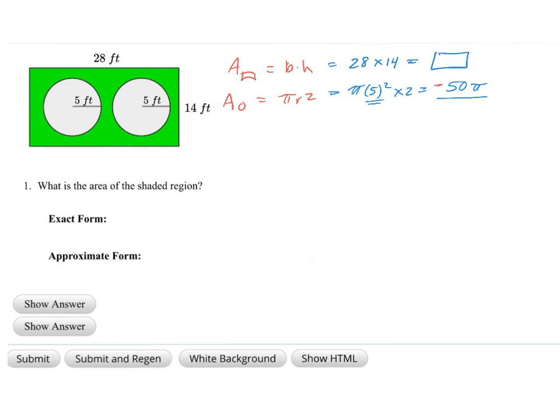Then to finish off this problem, we're going to subtract off our two circles, which is 50 pi, from the rectangle, and that'll be our answer. So this answer will be some statement. Since these are not like terms, I'll take my rectangle answer minus 50 pi, and that's your answer for the exact value.